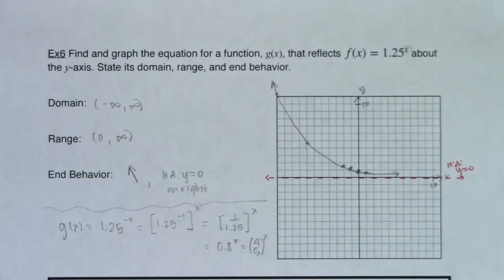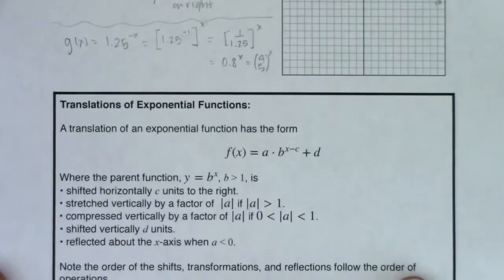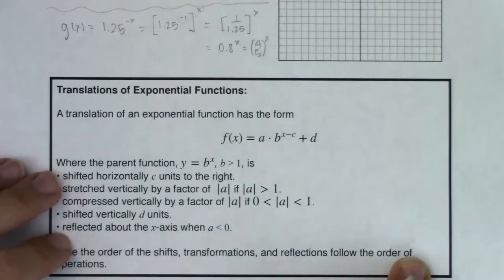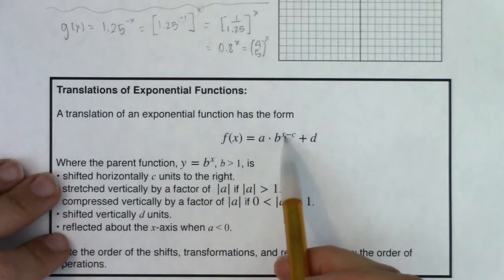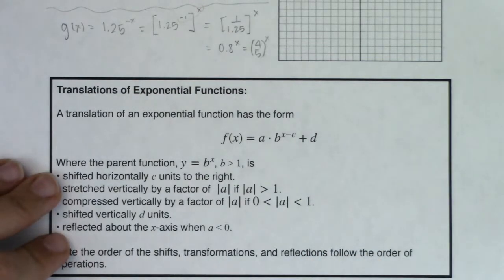So before we get out of this, I just want to kind of summarize all these transformations that we've done. So if you have your parent function, b to the x, I can start transforming it. So I can translate this, I could multiply a constant out in front of the exponential expression, I could add or subtract a constant up in your exponent, or I could add and subtract a constant outside of your exponential expression.